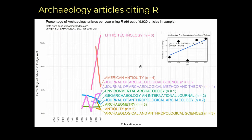We have only 66 articles so far, and this is really not a lot. We can also see that journals citing R have only started doing so in the last two years, like in 2016 and 2017. We made a linear regression model on the articles in the Journal of Archaeological Sciences, which is the one journal that has more than 10 articles citing R in the last 10 years, and the p-value indicates that there is not a significant rise so far in archaeology articles citing R.